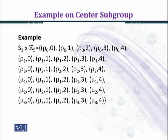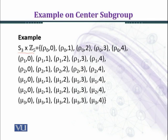We are now considering an example in which we shall find the center of a group which is non-trivial: S3 cross Z5. S3 is the symmetric group on the set X = {1, 2, 3}, consisting of all permutations on that set. There are six elements, denoted by ρ0, ρ1, ρ2, μ1, μ2, μ3.